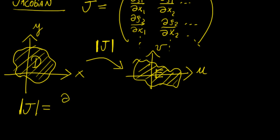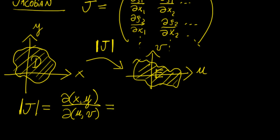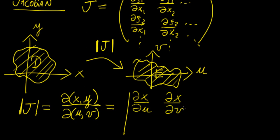In two dimensions, the Jacobian is usually written as the partial of (x, y) with respect to (u, v). This means x is a function of u and v, and y is a function of u and v. It is the determinant of the following matrix: partial of x with respect to u, partial of x with respect to v, partial of y with respect to u, and partial of y with respect to v.